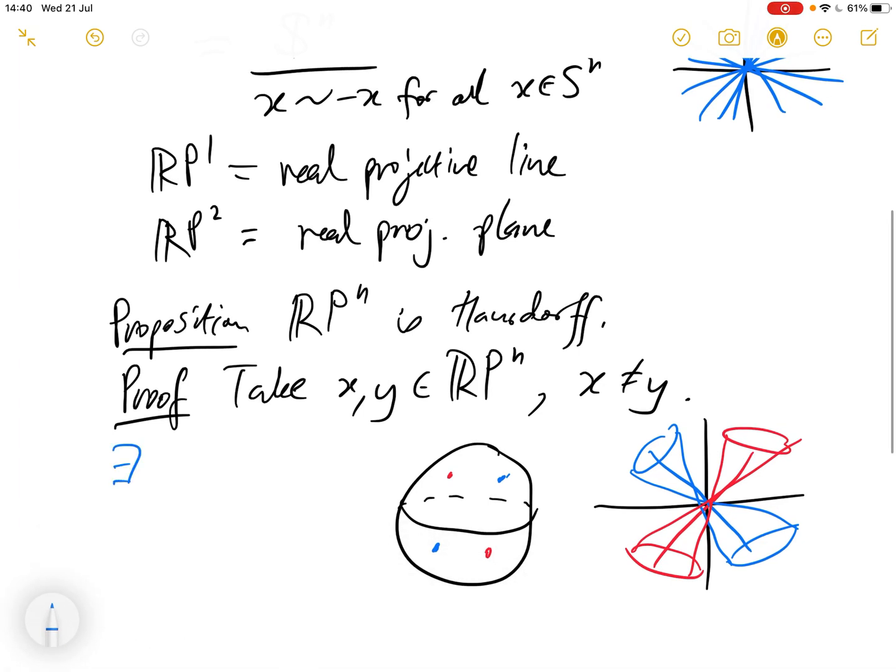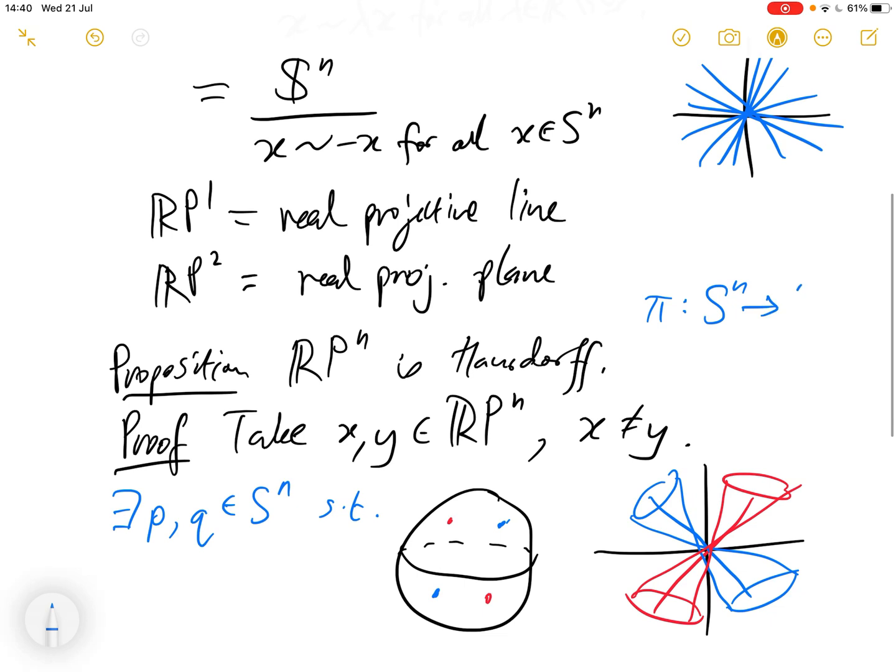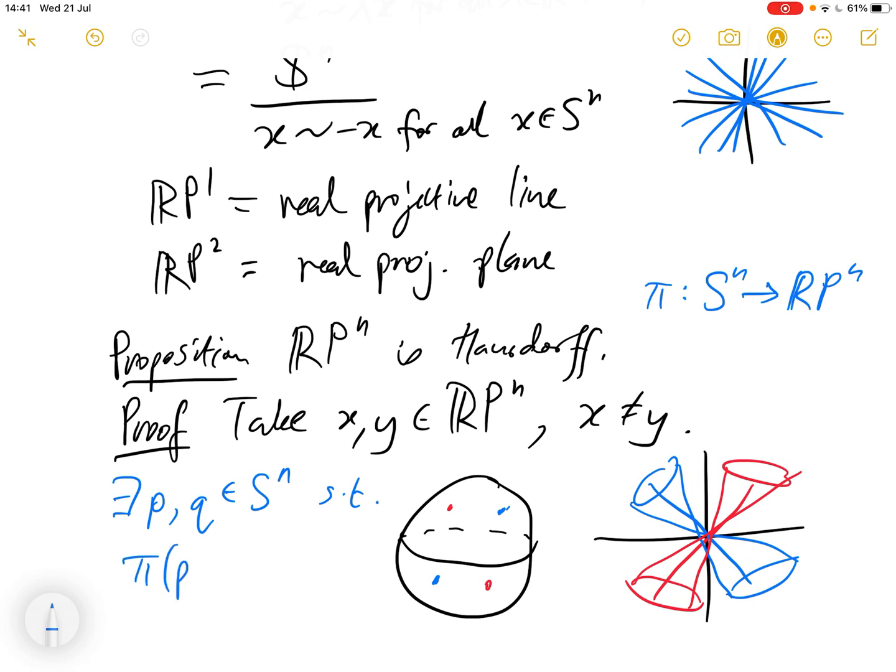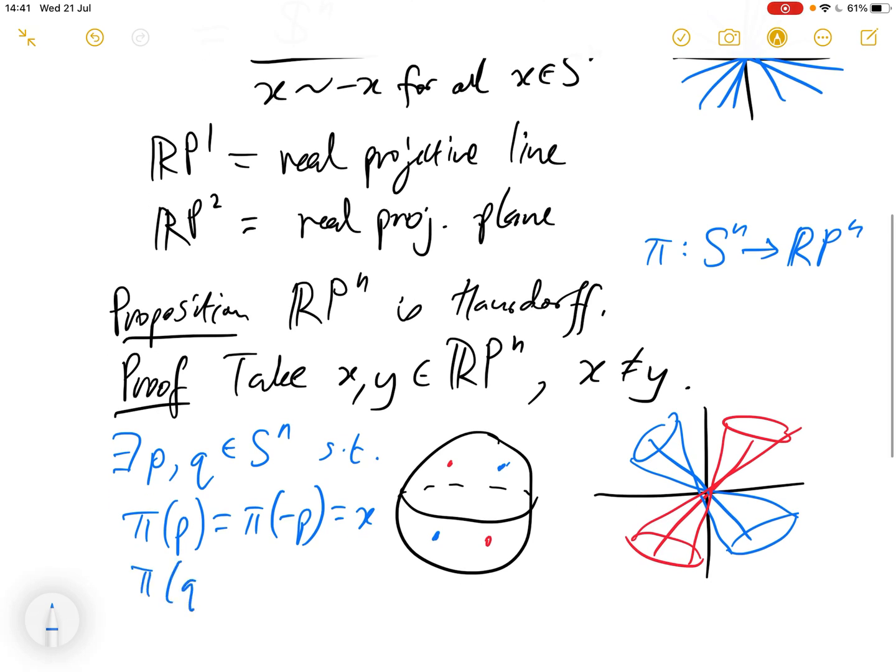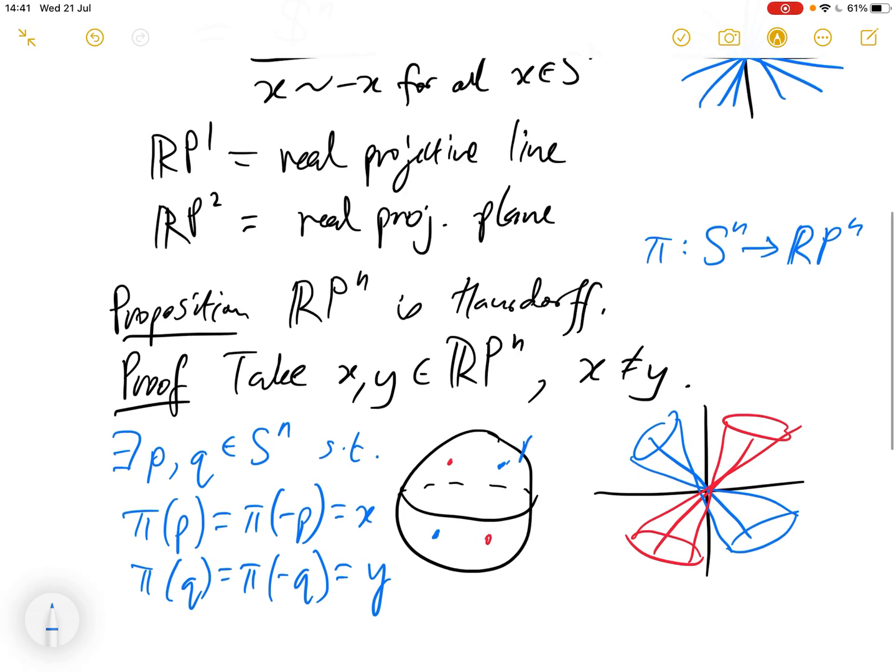And so if we give these names, we can say there are P and Q in Sn, such that if pi is the quotient map, so maybe if we let pi from Sn to RPn be the quotient map, then such that pi of P is pi of minus P is x, and pi of Q is pi of minus Q is y.